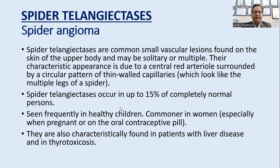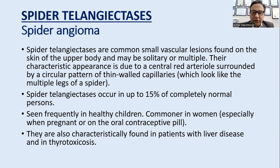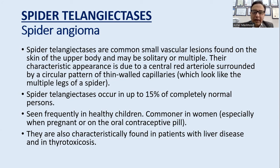Spider telangiectasias or spider angiomas are a common vascular lesion found on the skin of the upper body; they can be solitary or multiple. Their characteristic appearance is a central red arteriole surrounded by a circular pattern of thin-walled vessels which look like multiple legs of a spider — a central arteriole with several small tributaries radiating from the center.